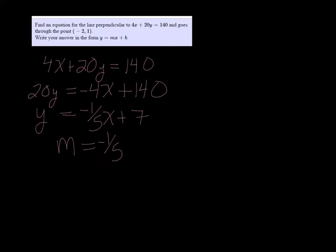If I want a line to be perpendicular to that, my slope is going to be just positive 5, because it's going to be the negative reciprocal. And we want it to go through negative 2, 1.